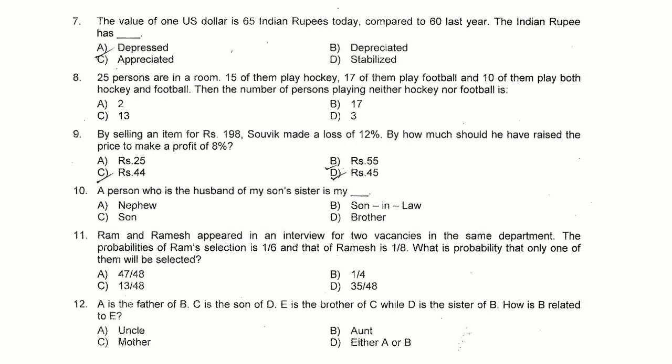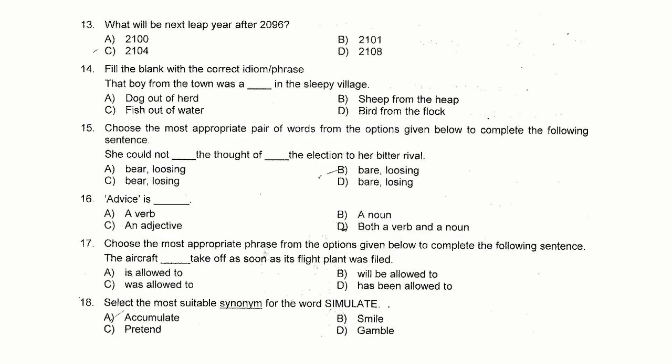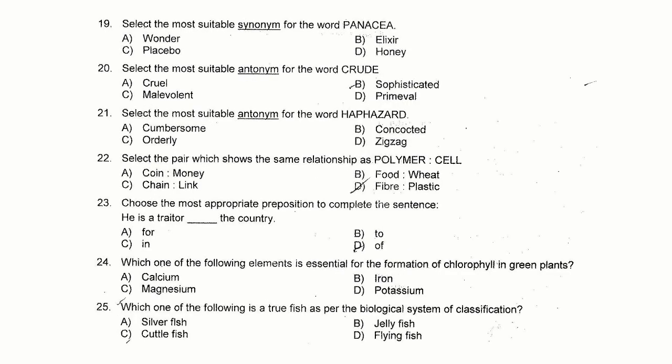Question numbers 7 to 12 you can see on this slide. You can pause the slide and read the questions easily. Question numbers 13 to 18 are on this slide — all questions have four options. For the correct answer you will get one mark; for a wrong answer, 0.25 mark will be deducted. Question numbers 19 to 25 you can see on this slide.